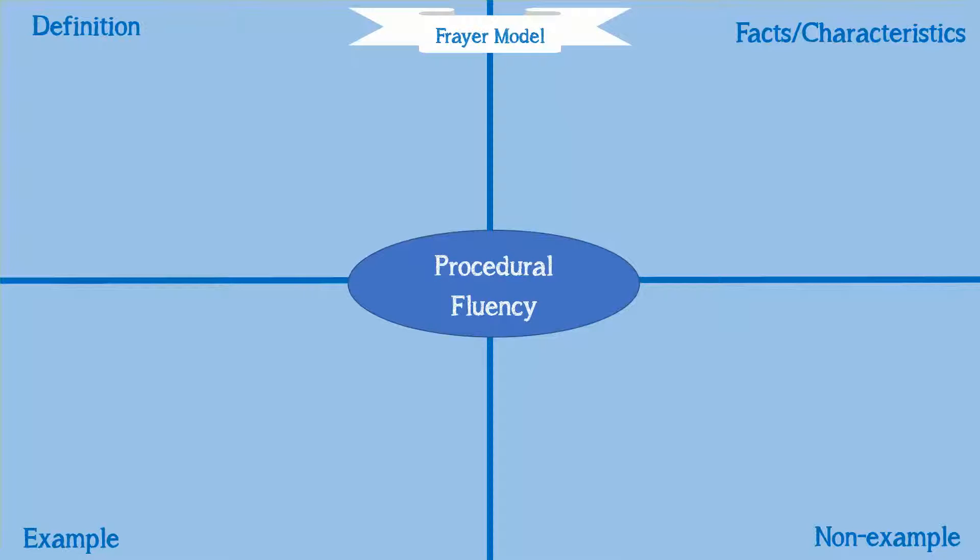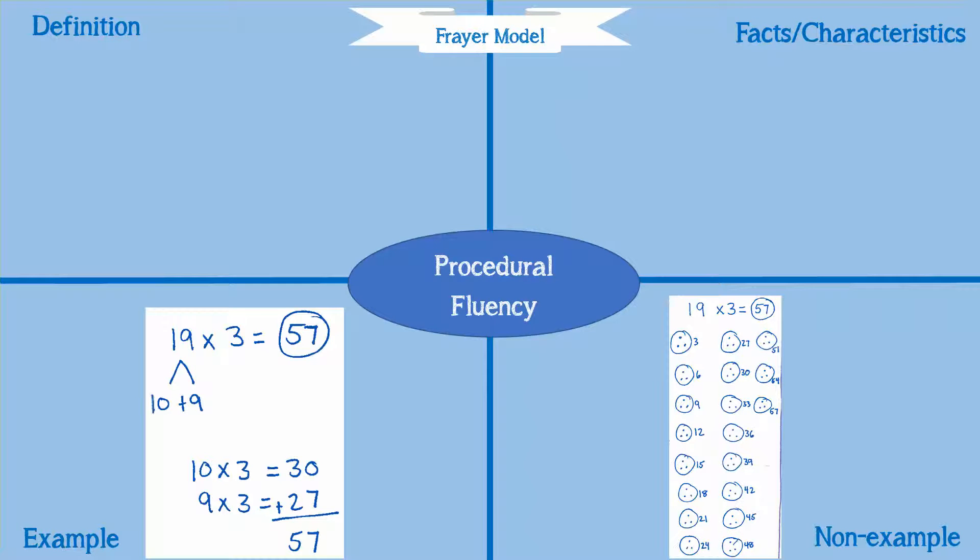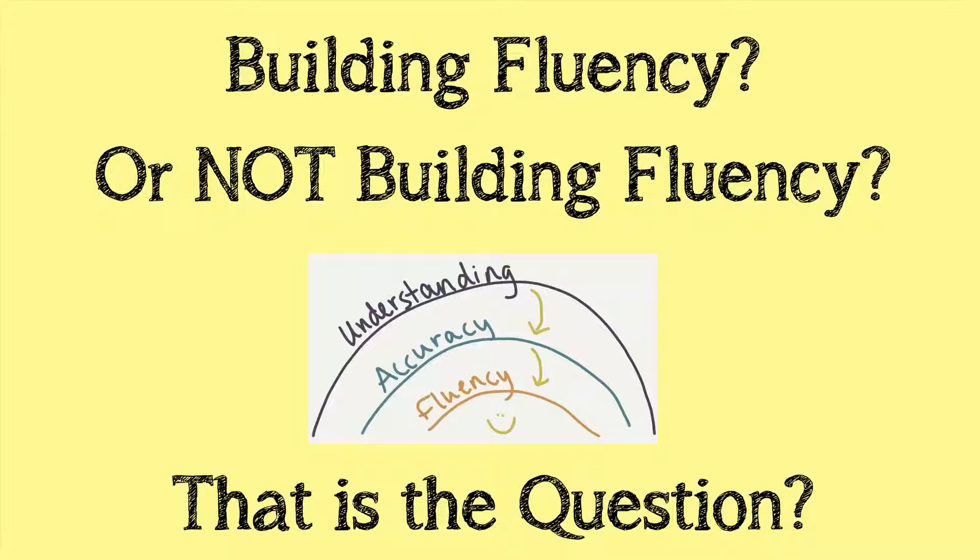So when we come back to our Frayer model, we can add an example of a student that would have fluent work and a non-example of a student that understood the concept but isn't there with the automaticity, the automatic recall. Now I want us to think about building fluency. I'm going to show you two videos and I want you to think if that activity is truly building fluency or not building fluency.